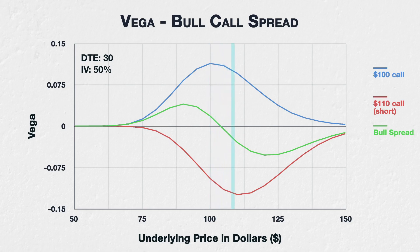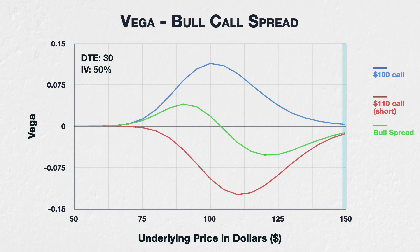By the time we get to an underlying price of $110 and beyond, the vega for the spread is negative, meaning the spread will now lose value if implied volatility increases. This is because with the underlying price above both strikes, the $110 call will gain more value from an increase in implied volatility than the $100 call will. As we are short the $110 call, this results in the spread losing value. Then finally to the far right of the chart, both options are now deep in the money and have very little sensitivity to implied volatility changes again. Vega is therefore very small for both individual options, and also the spread as a whole.